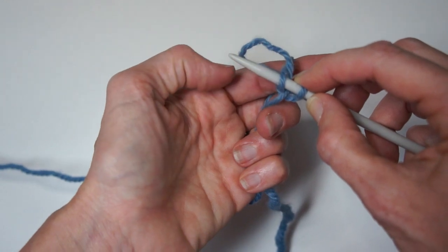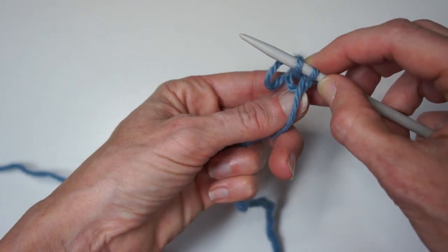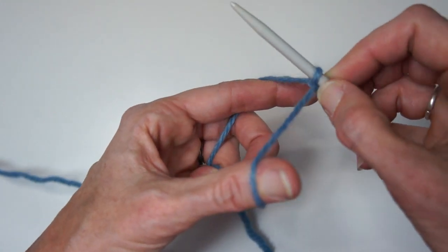Once you have that, remove the thumb, put the thumb inside the triangle, and tighten down.